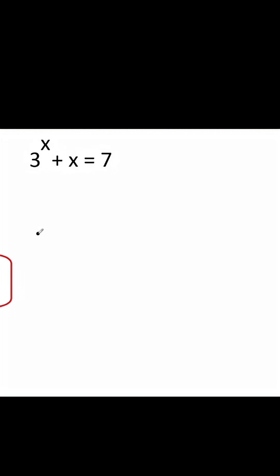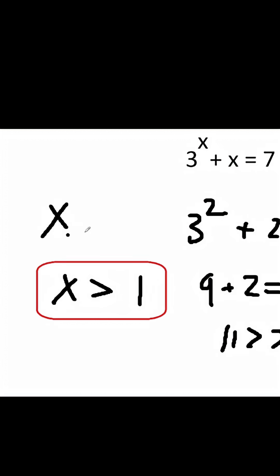Now let's try 2. So 3 to the 2 plus 2 is equal to 7. 3 to the 2 is the same thing as 9 plus 2 is equal to 7. 9 plus 2 is 11 and 11 is greater than 7. So we know that x must be less than 2. Let's put a box around this.